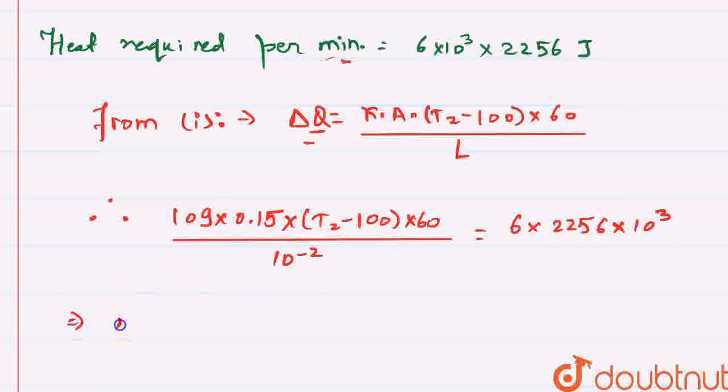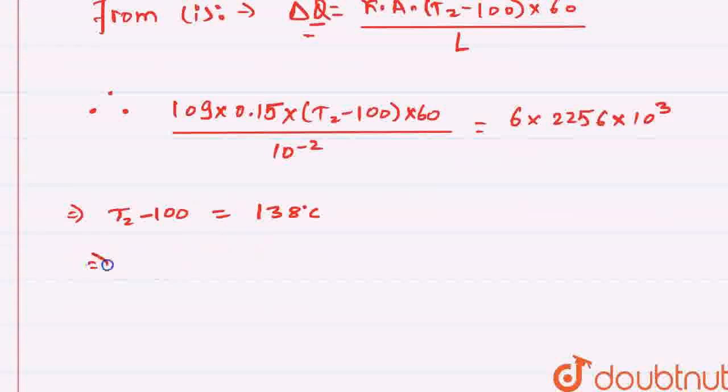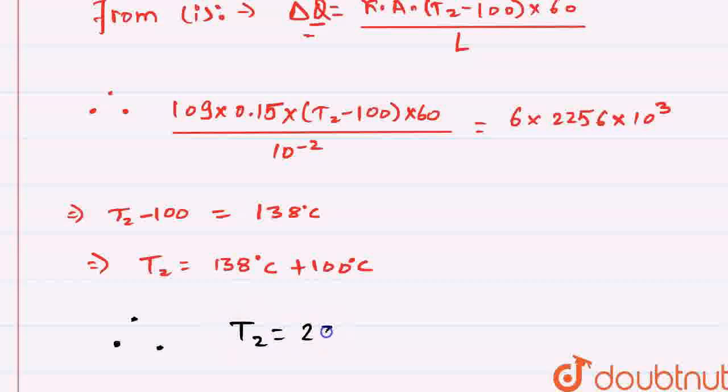From here, we'll get T2 minus 100 will be equal to 138 degrees centigrade. And from here, we can say that T2 will be 138 degrees centigrade plus 100 degrees centigrade. Therefore, we get the temperature of the flame as 238 degrees centigrade.